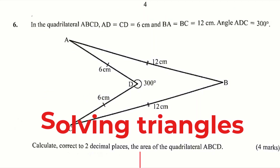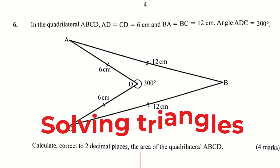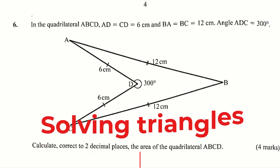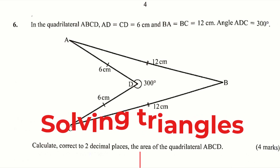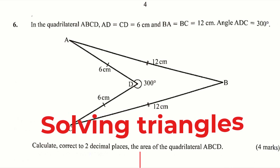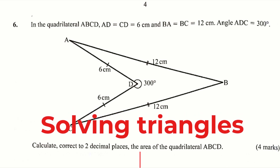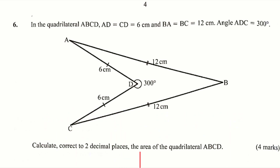Question number 6. In the quadrilateral ABCD, AD equals CD equals 6 centimeters, and BA equals BC equals 12 centimeters. Angle ADC equals 300 degrees. So there is the diagram. Calculate, correct to two decimal places, the area of the quadrilateral ABCD.